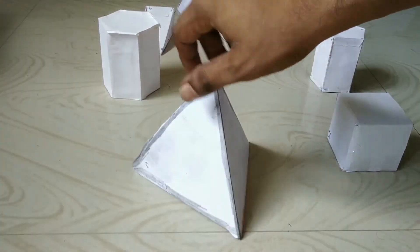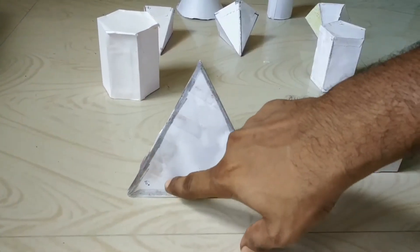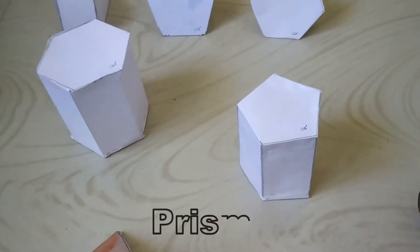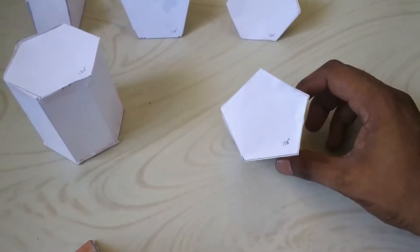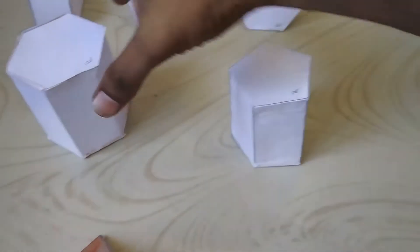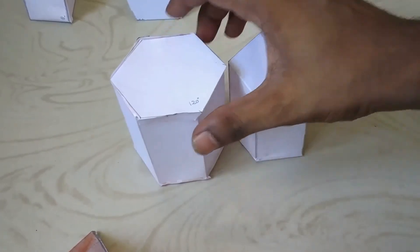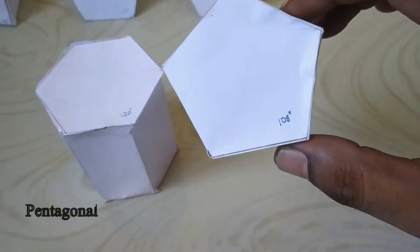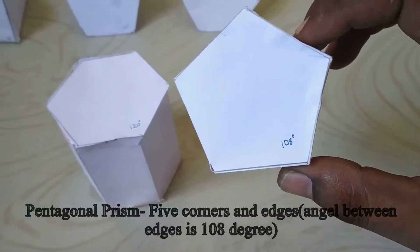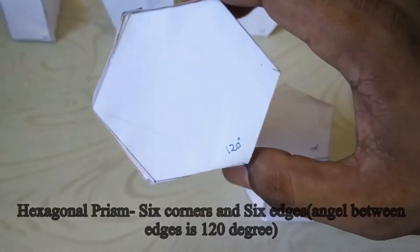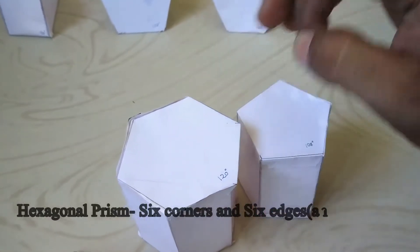The next one is a prism. This is a pentagonal prism, and this one is a hexagonal prism. In a pentagonal prism, the angle between the edges is 108 degrees. For hexagon, that is 120 degrees. In